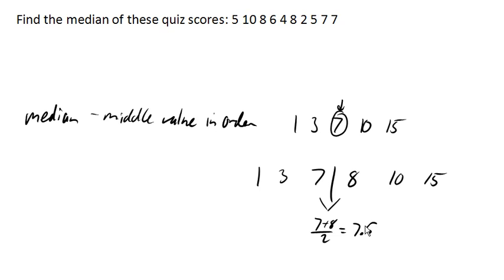So if we have an odd number of data, then the median will be fairly easy to find. It will be in the middle. And if we have an even number of data, then we're going to need to split the difference.